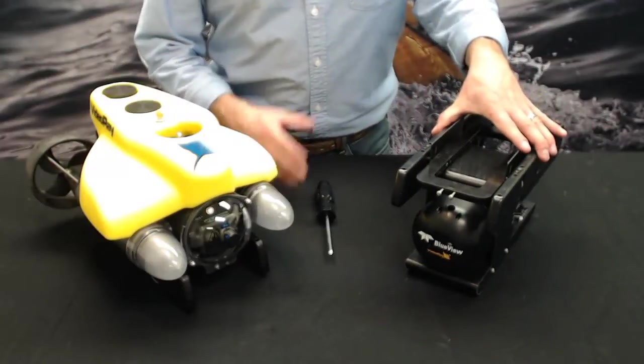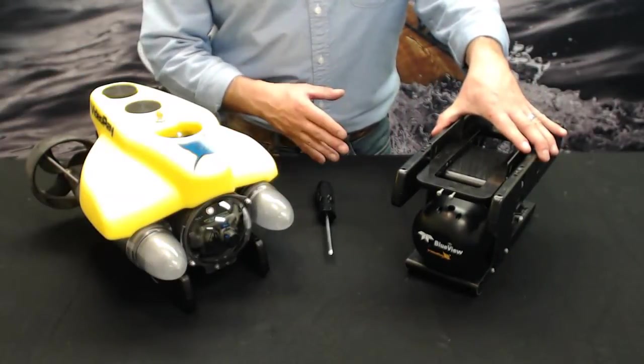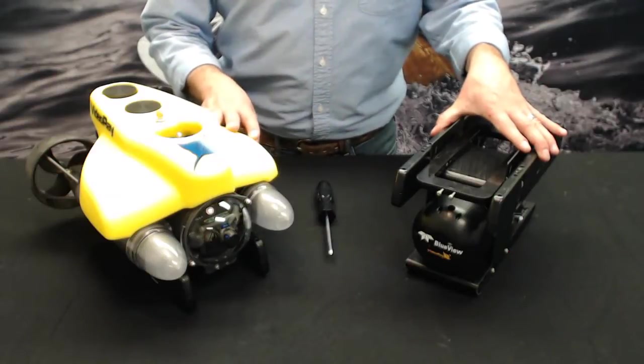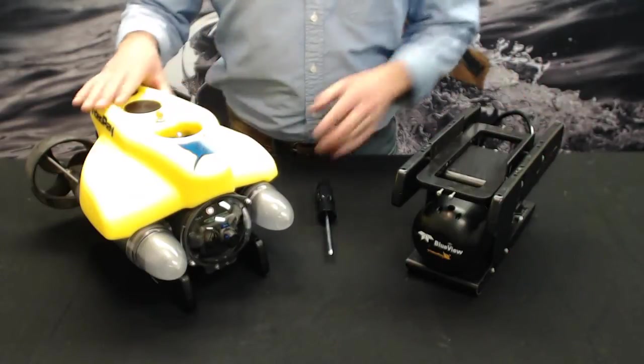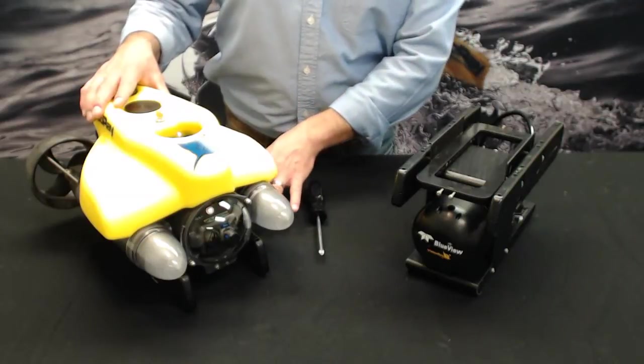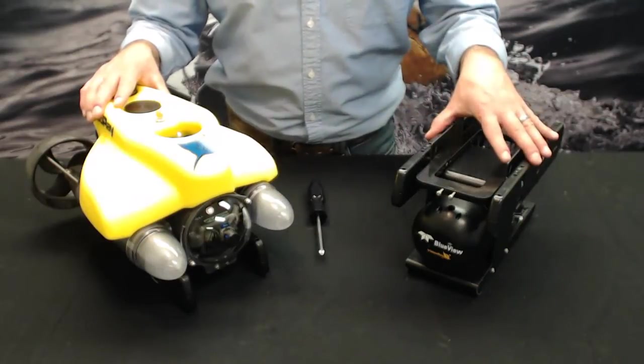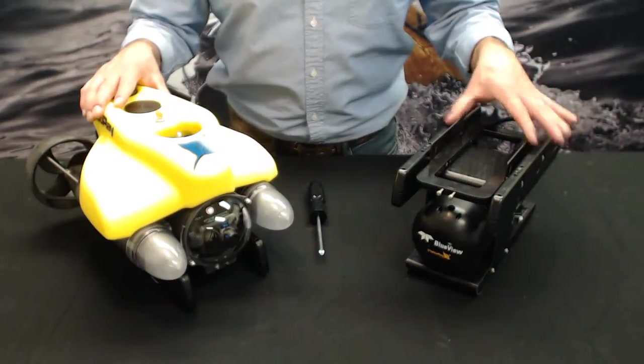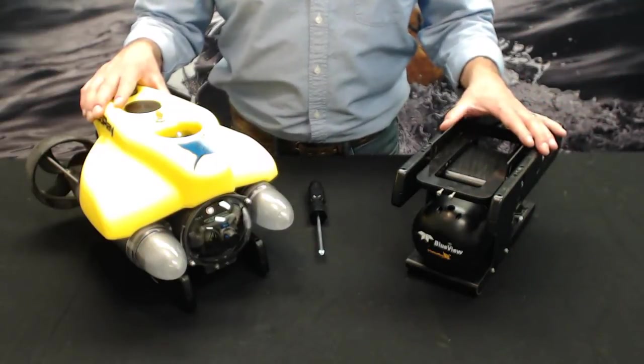I'd like to show you how to attach the BlueView multi-beam imaging sonar integration skid to your Pro 4 remotely operated vehicle submersible. I'm going to show you how to remove the ballast skid that's already on there, put on the new integration skid, and plug it in so it's ready to use underwater.